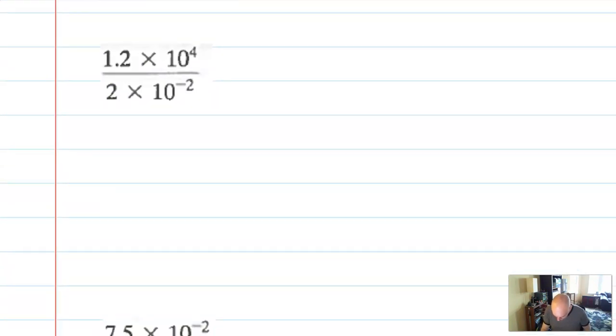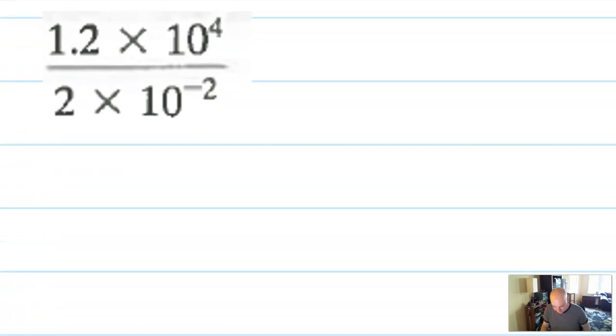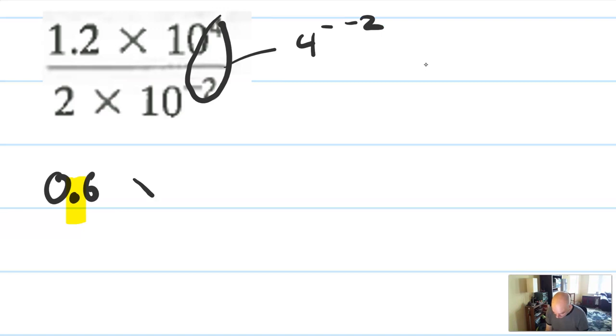Let's keep going. 1.2 times 10 to the 4th over 2 times 10 to the negative 2. Okay, so 1.2 over 2, that's going to be 0.6. And I see right away that I'm going to have to move that decimal place one more, and that's fine. And here I have 4 and minus 2, but remember the minus 2 is on bottom, so do this 4, minus minus 2, and get times 10 to the 6th.